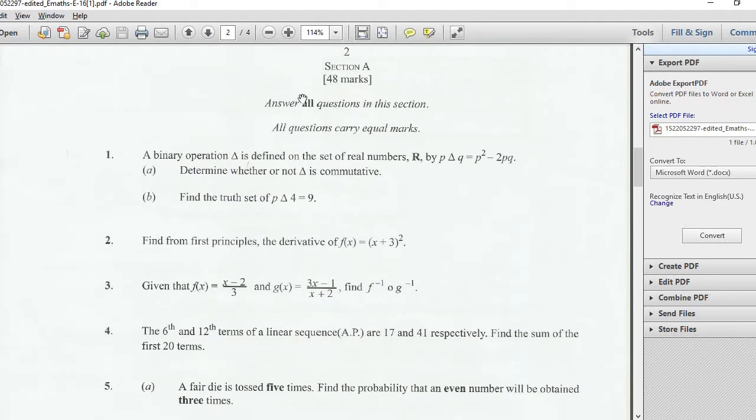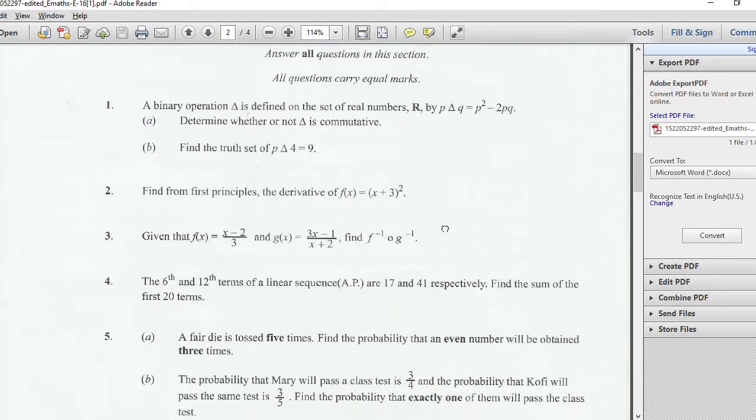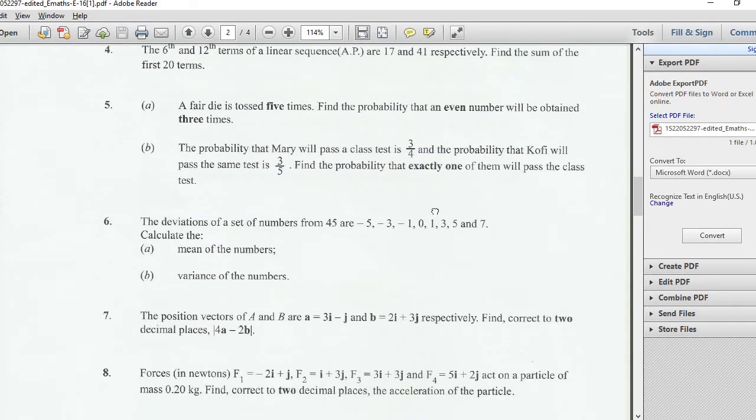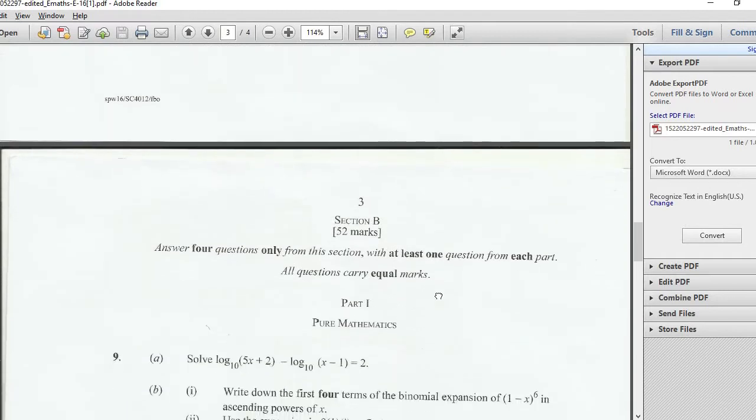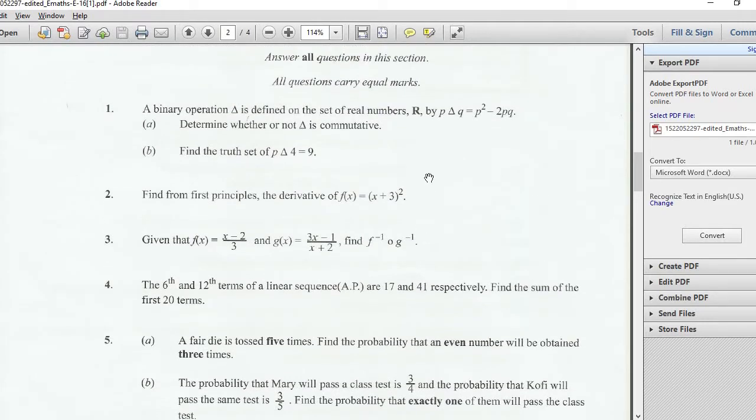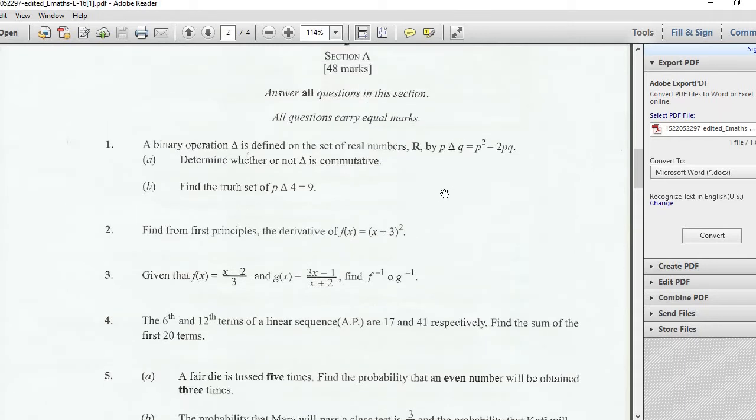Section A, 48 marks. All questions carry equal marks. Now if you are a candidate, for section A you really want to score every single question here. The questions here are basic, you can easily score everything. If you really want to make an A you have to ace this part. You don't want to make an error here. I'm probably going to solve one or two questions per video because I don't want them to be too long.